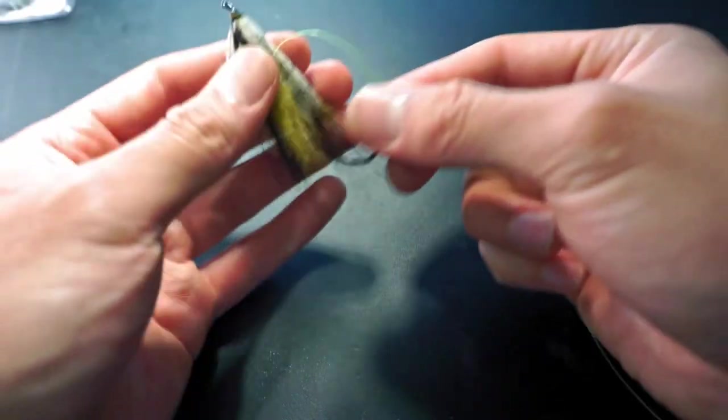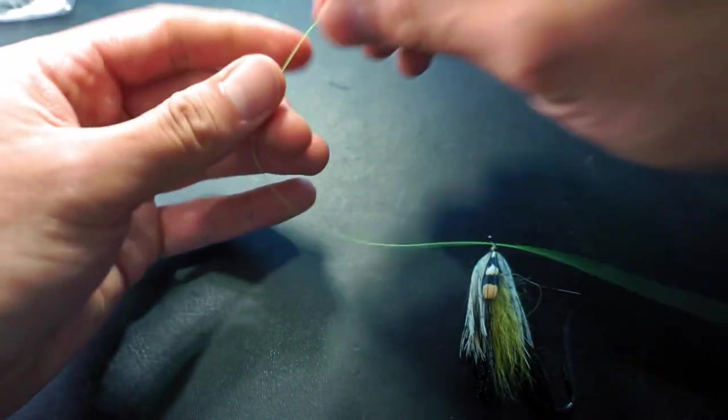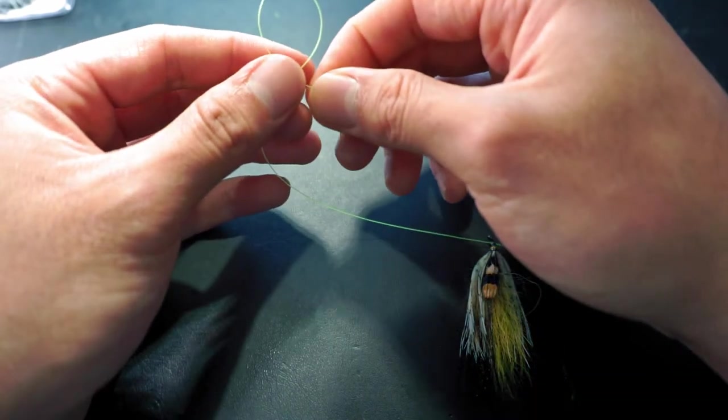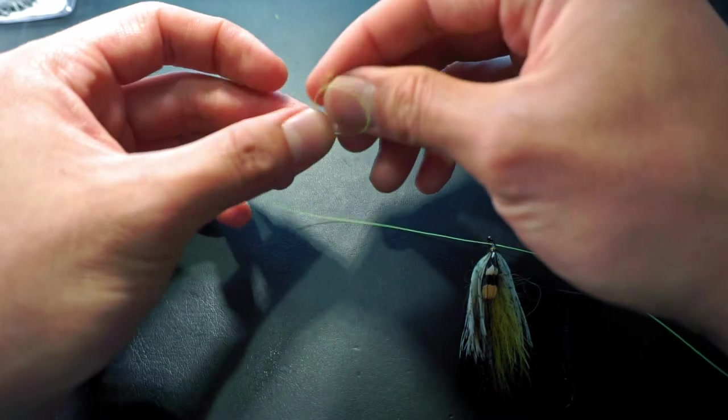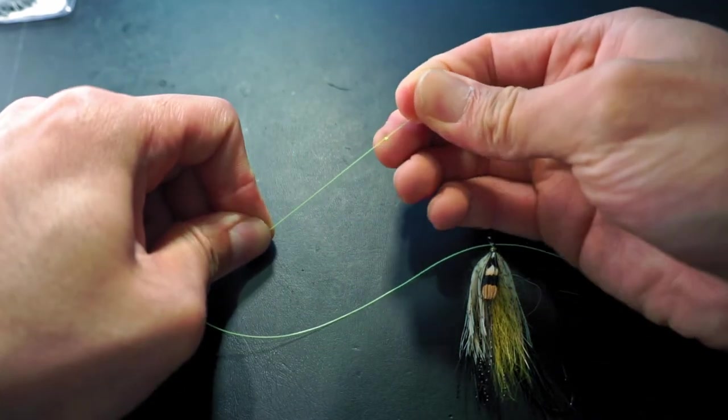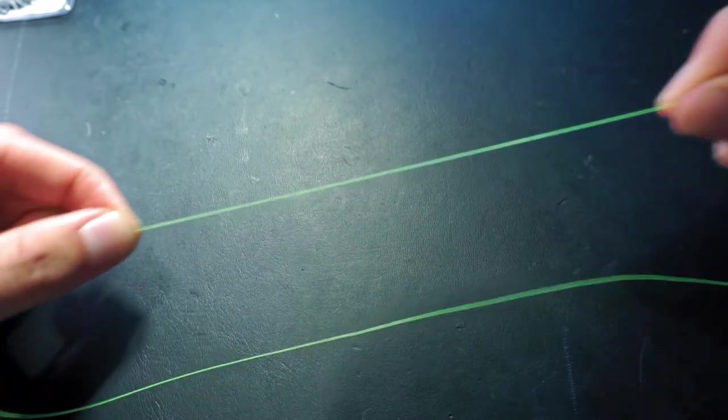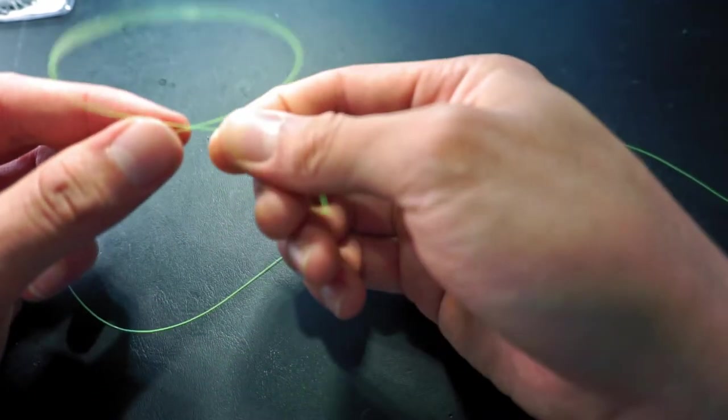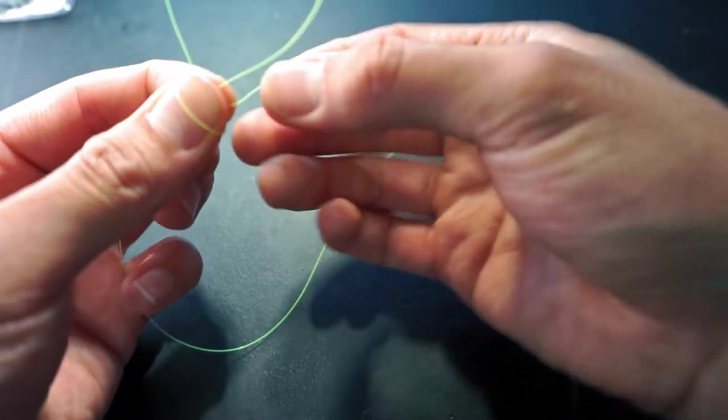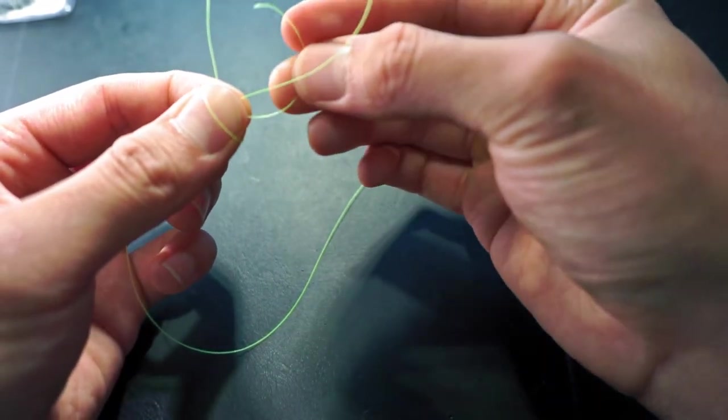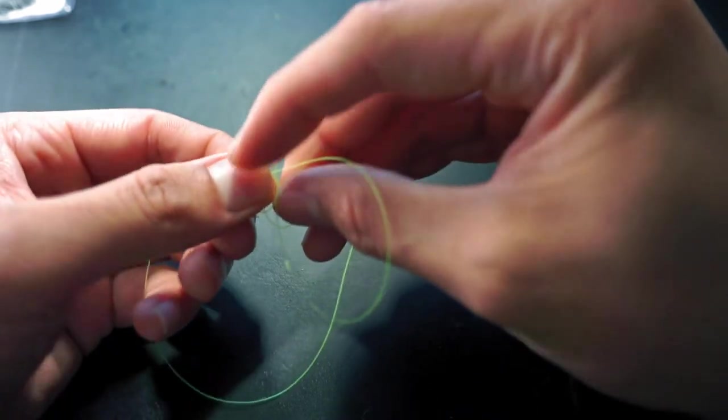I'm going to tie the turtle knot again so you can see in real time how it looks. First thread the fly, then make an overhand knot. Then making the first big loop, making the second small loop.